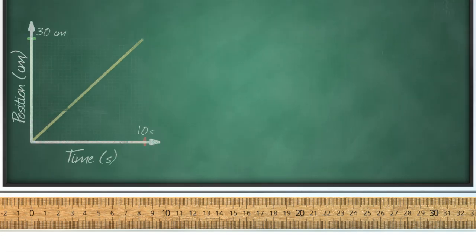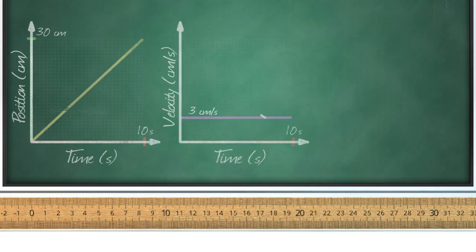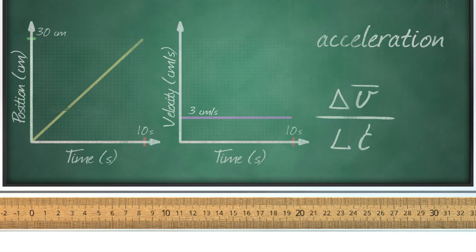So when we look at the slope of the position graph, we can figure out the velocity of the ball. But what about when we look at the slope of the velocity graph? Well, it turns out that we can actually figure out the ball's acceleration, represented by the formula delta v over delta t is equal to a.